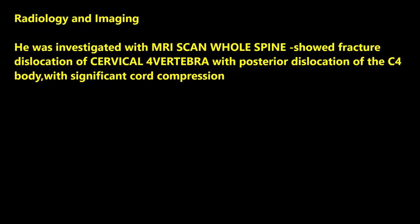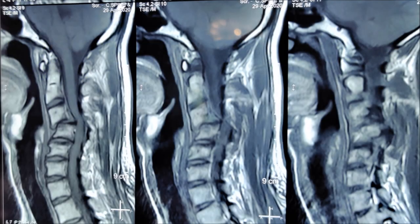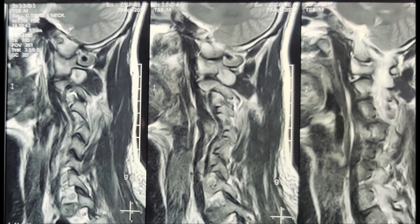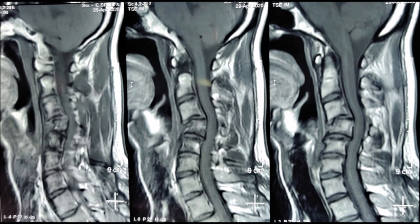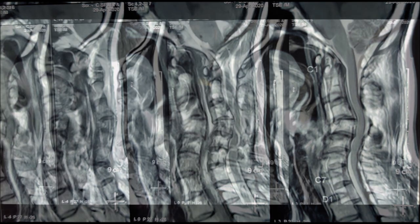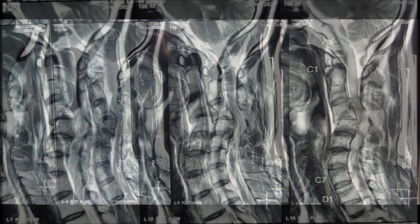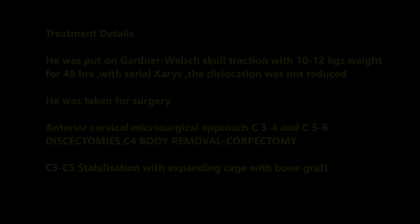He was investigated with MRI scans. Cervical spine and whole spine screening showed a fracture dislocation of C4 vertebra with retropulsion of the body of C4, with very significant cord compression at C3 to C5 with significant pressure.